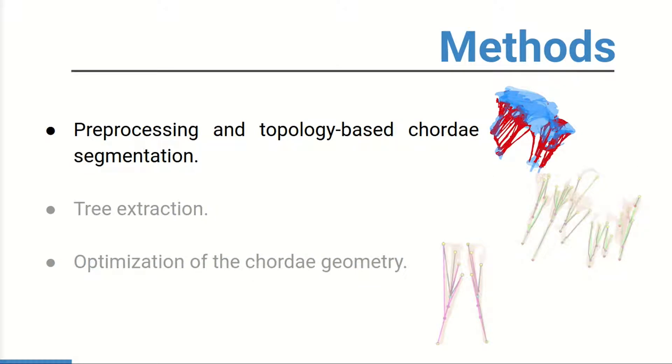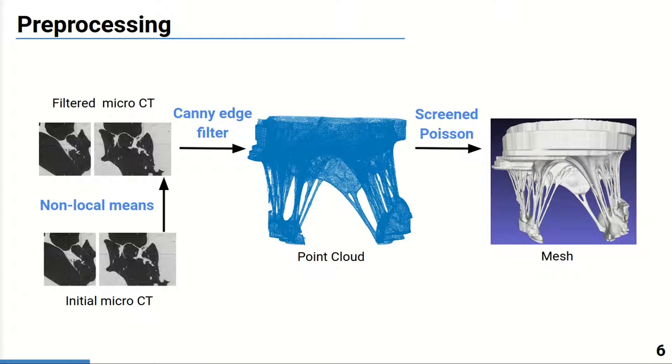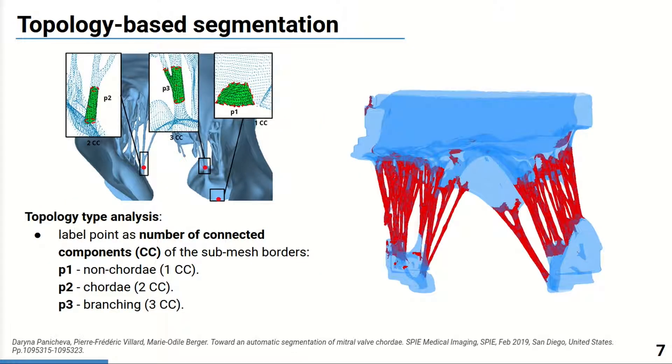The proposed chordae segmentation pipeline consists of three consequent steps. The first one includes preprocessing and topology-based segmentation. At the preprocessing step, the images are denoised, after the edges are extracted using Canny filter, and then to keep the connectivity information the points are meshed.